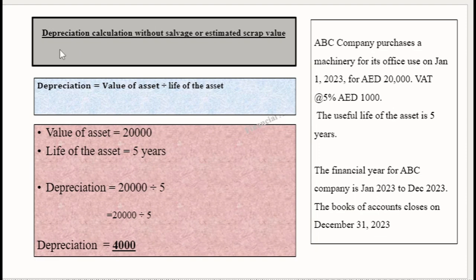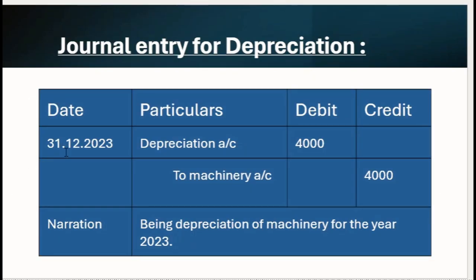Let's see how depreciation is calculated without the estimated scrap value. If a company purchases an asset for 20,000 and we know only the useful life of the asset — say we do not know the estimated scrap value — then depreciation = Value of Asset ÷ Life of Asset = 20,000 ÷ 5 = 4,000 per year. The journal entry on 31-12-2023 would be: depreciation account debited 4,000, to machinery account 4,000, being depreciation of machinery for the year 2023.